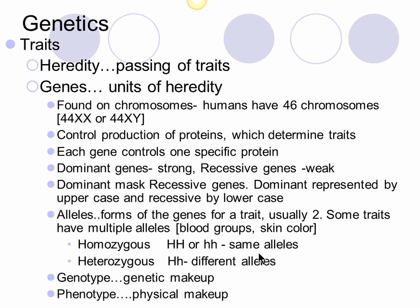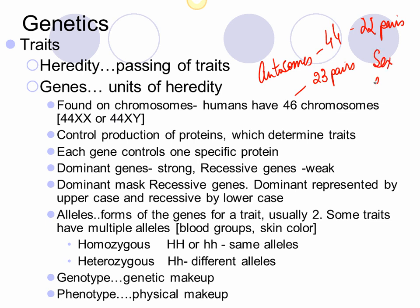These genes are found on chromosomes. As we did when we were doing meiosis, human beings have 46 chromosomes, or what are called 23 pairs. Of these, 44 — or 22 pairs — are known as autosomes. The last pair, the 23rd pair, is a pair of sex chromosomes.